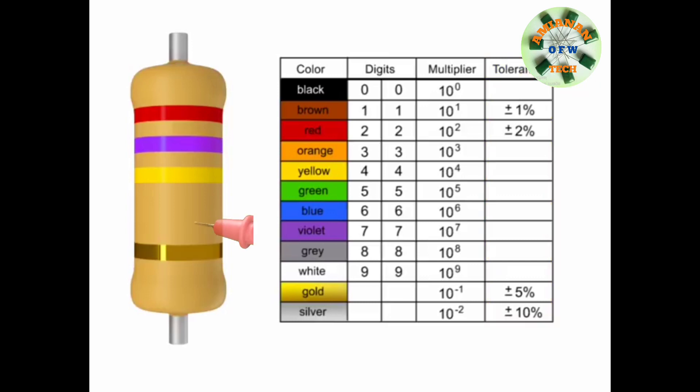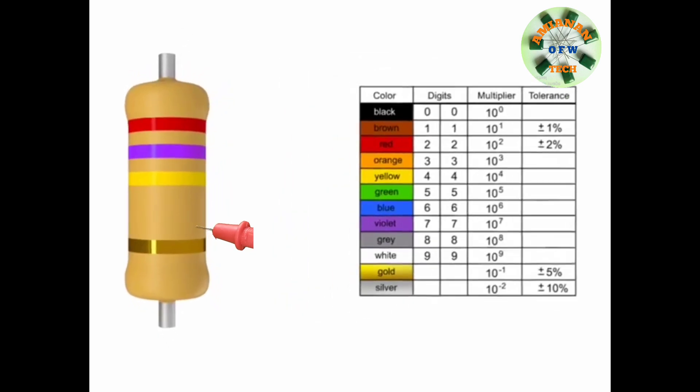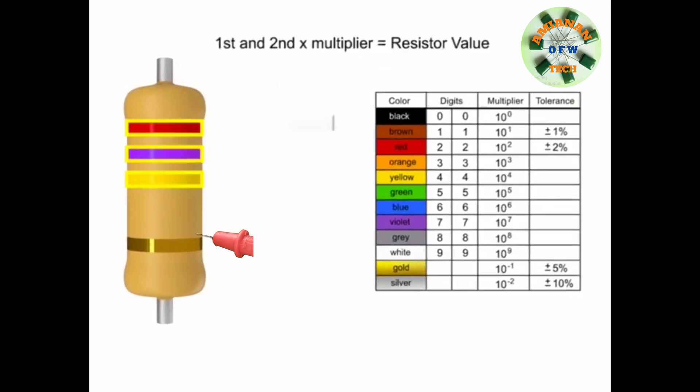You read resistor bands beginning with the end that has the most bands. A space between the third and fourth bands also indicates the reading direction.